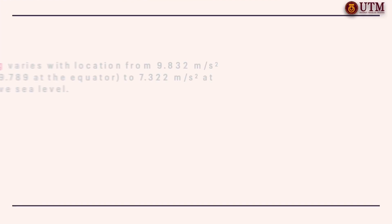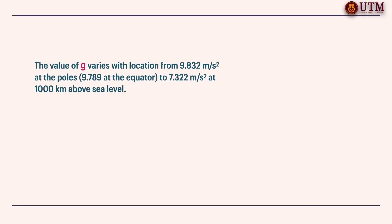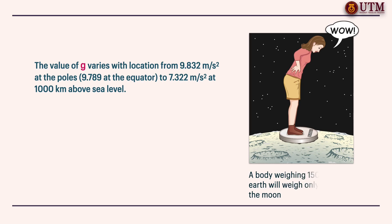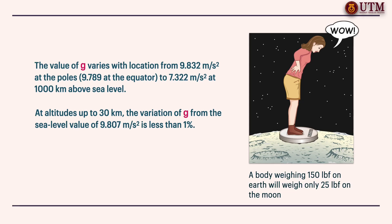The value of G or gravitational acceleration varies with location from 9.832 meter per square second at the poles to 7.322 meter per square second at 1000 kilometer above sea level. However, at altitudes up to 30 kilometers, the variation of gravitational acceleration from the sea level value of 9.807 meter per square second is less than 1%. Therefore, for most practical purposes, the gravitational acceleration can be assumed to be constant at 9.807 meter per square second, often rounded to 9.81 meter per square second.